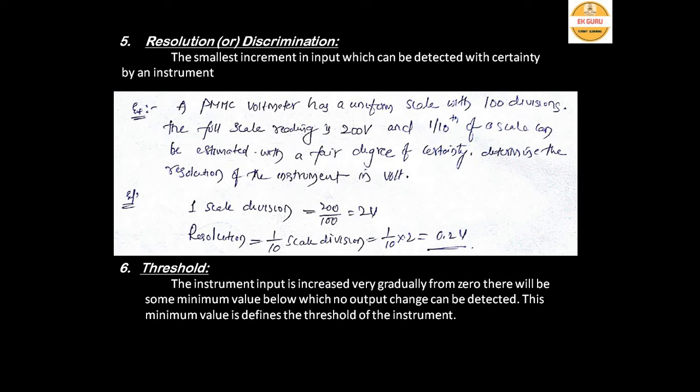Threshold is the minimum value of input below which no output can be detected when the input is increased very gradually from zero. For example, if an ammeter shows no deflection below 2 amperes, but the full scale is 100 amperes, then 2 amperes is the threshold value. The pointer deflection starts only from that threshold point onward.